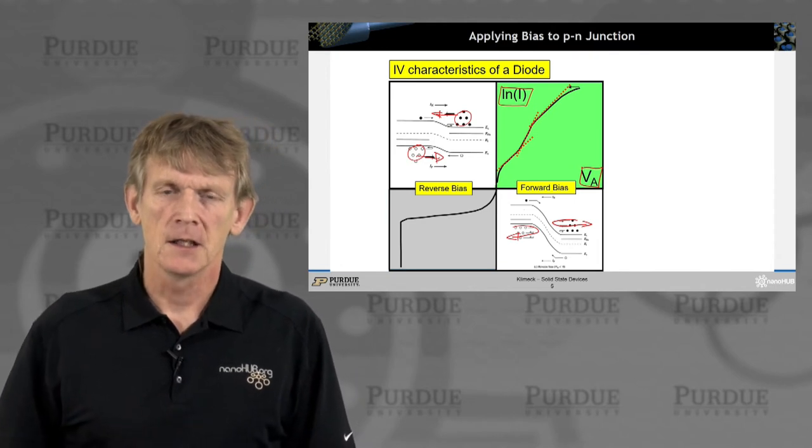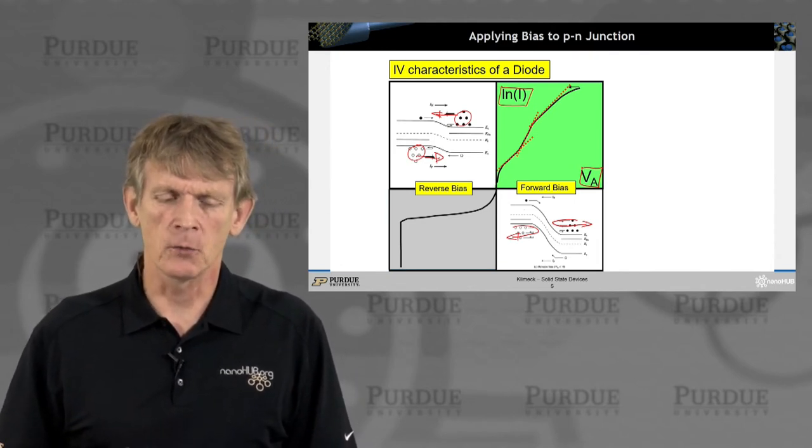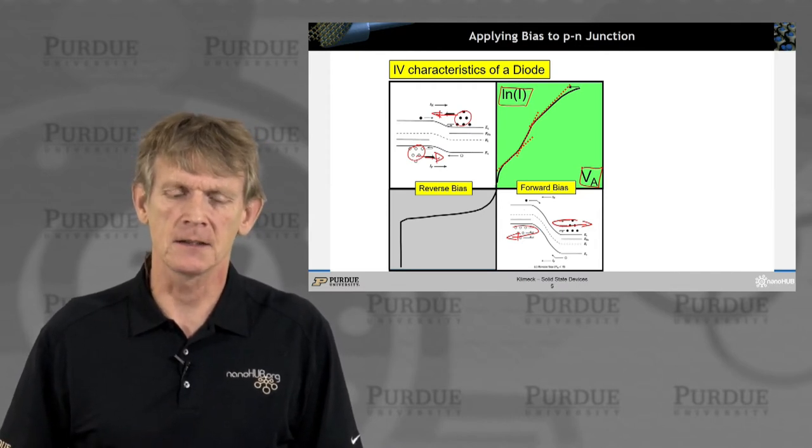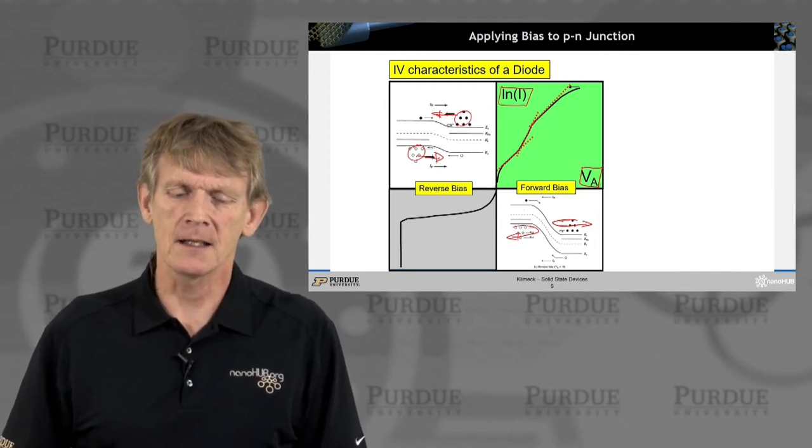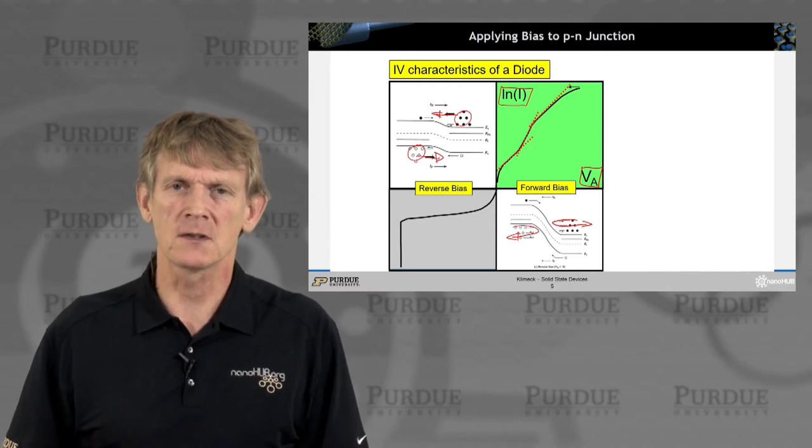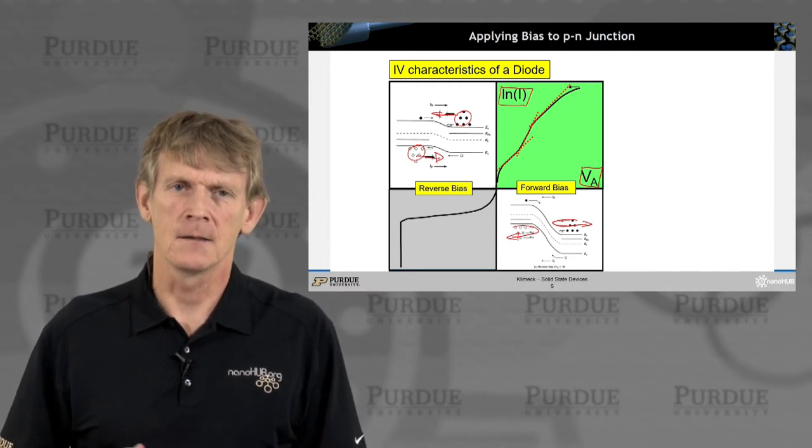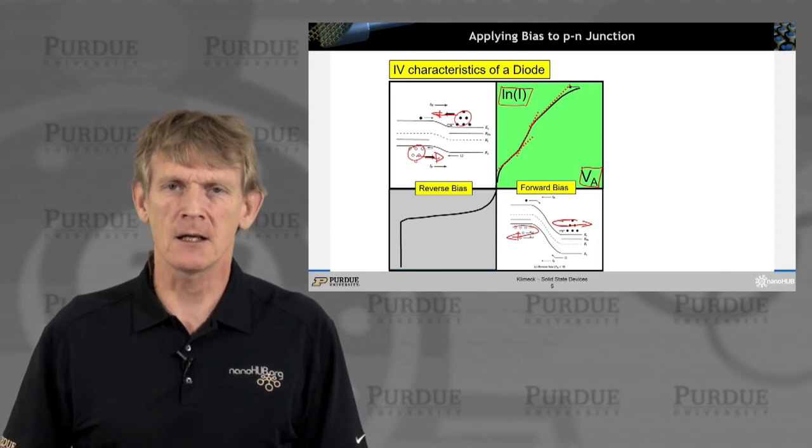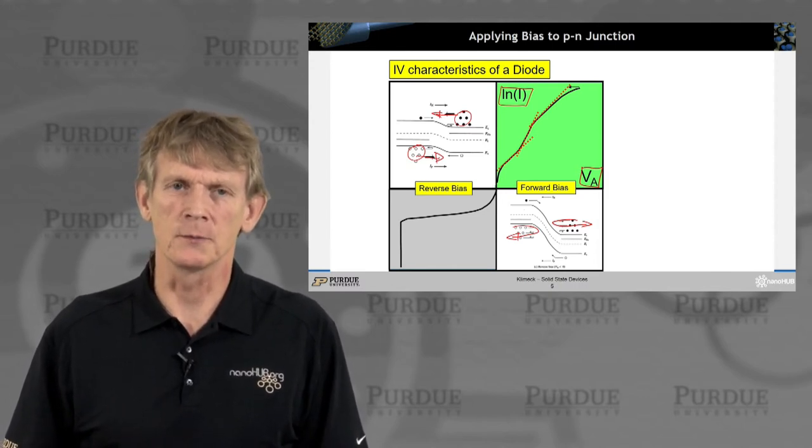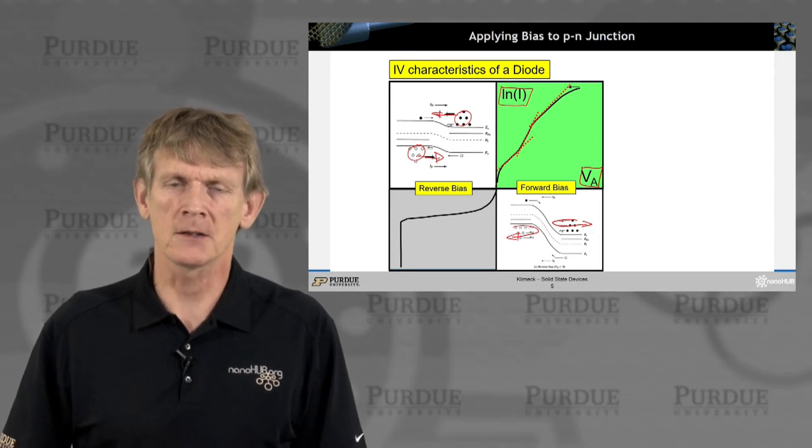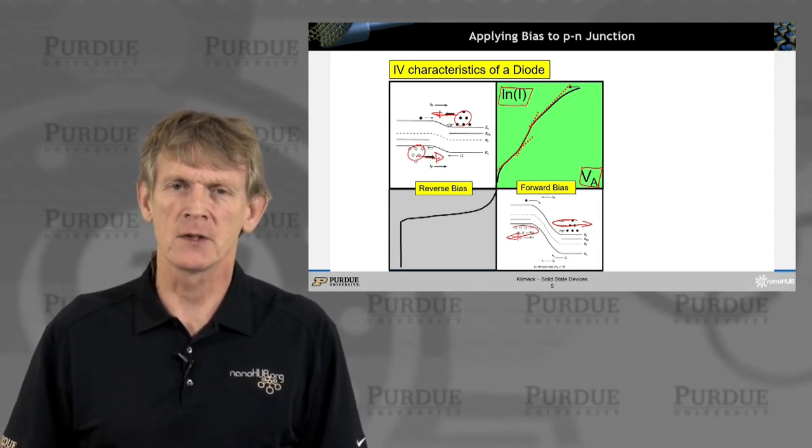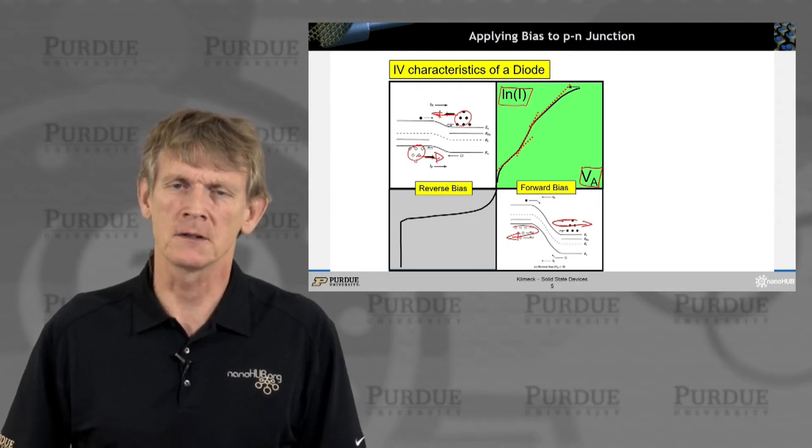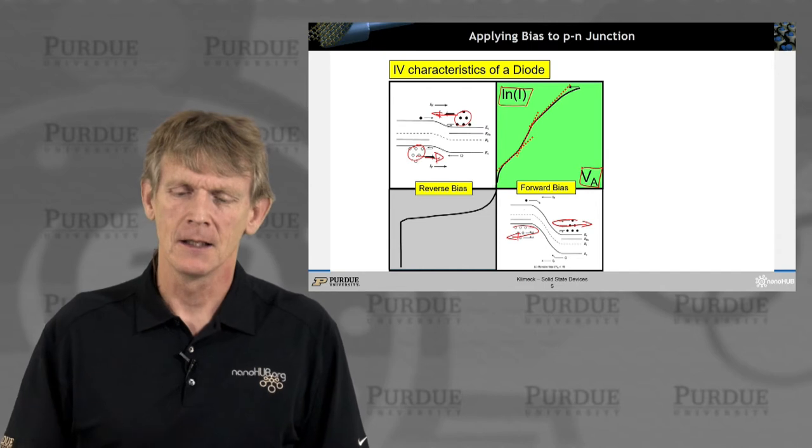In the forward bias direction, there's somewhat of a squiggly line indicated on the exponentials. And what this really indicates is that there is a couple of different slopes that this exponential takes. And the diodes are being characterized by these different slopes. There are certain quality measurements as to their behavior. And these slopes reflect back on the internals of the device.